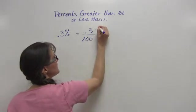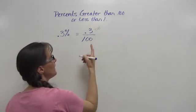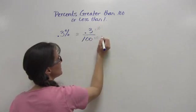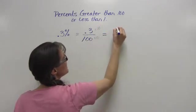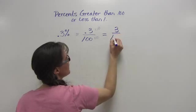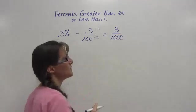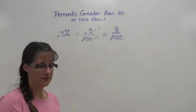That would move it one place to the right. Well, whatever I do to the numerator, I must also do to the denominator. And so now I can rewrite that as 3 over 1,000. 3 one-thousandths.